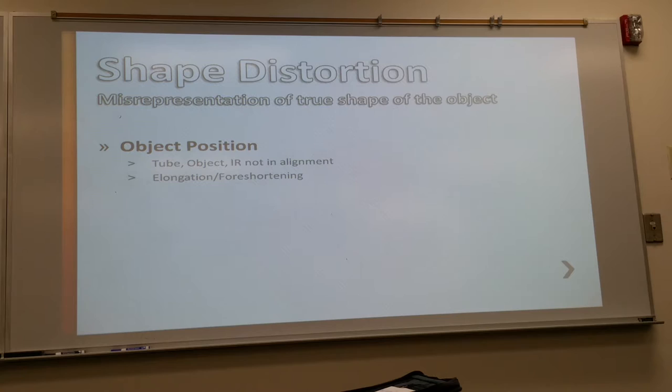There will be times that we don't want that. When you're all lined up, we get minimal shape distortion. When we start to move any one of these three factors, we're going to get elongation or foreshortening depending on how we move that. Regardless, if we have elongation or foreshortening, that is shape distortion and we will have a decrease in radiographic quality. There are times, lots of times, when we do this all the time. And it's not to reduce radiographic quality. It's to see body parts that are obscured due to the superposition of other body parts.